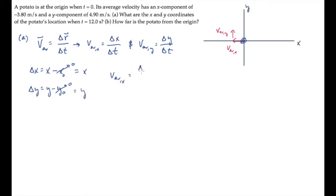Let's substitute that result into the x component of the average velocity equation and solve for the final position x to see that it equals the x component of the average velocity, multiply by the time that passes delta t, substitute the known values, and calculate to find the x location after 12 seconds as negative 45.6 meters.